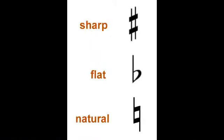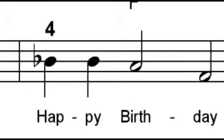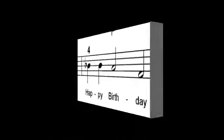In this lesson, we're going to talk about sharps, flats, and naturals. Sometimes they're worked into the beginning of the song in what's called a key signature, but we're not doing key signatures yet, so we're going to look at what's called accidentals. An accidental is when one of these three symbols is written into the music itself, so you would actually see one of these symbols next to a note.